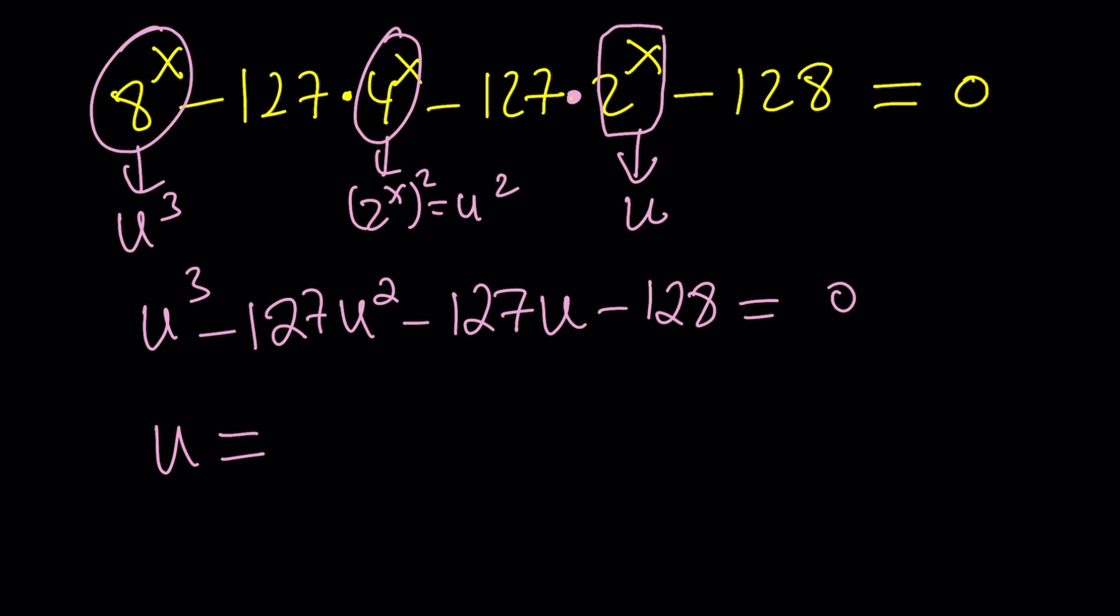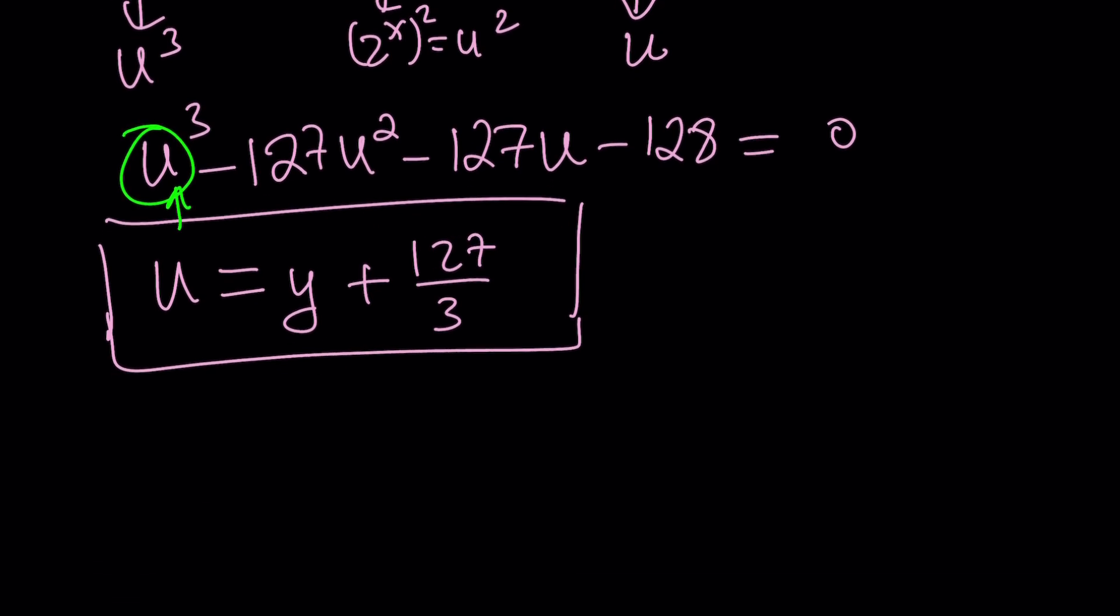So let's say you replace u with, I don't know, y + 127/3. And then plug it in, plug it in, and then it'll give you something nice. Well, wishful thinking, right? It's not going to be nice at all. But once you replace u with that, you will realize that y^2 will disappear. You'll end up with a depressed cubic, which can be solved by using the cubic formula.